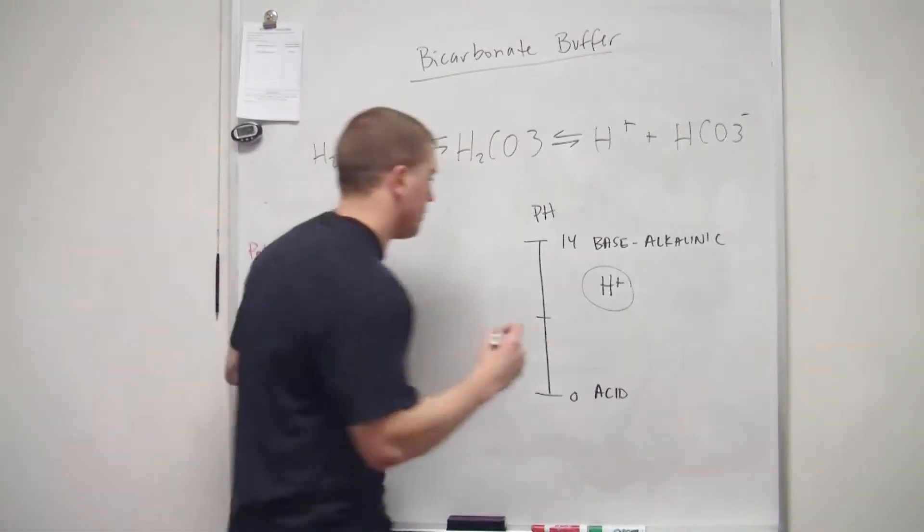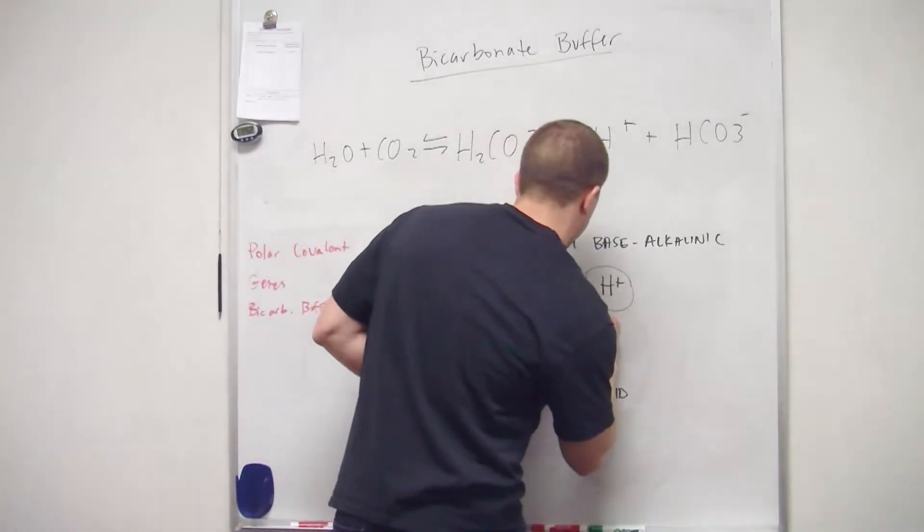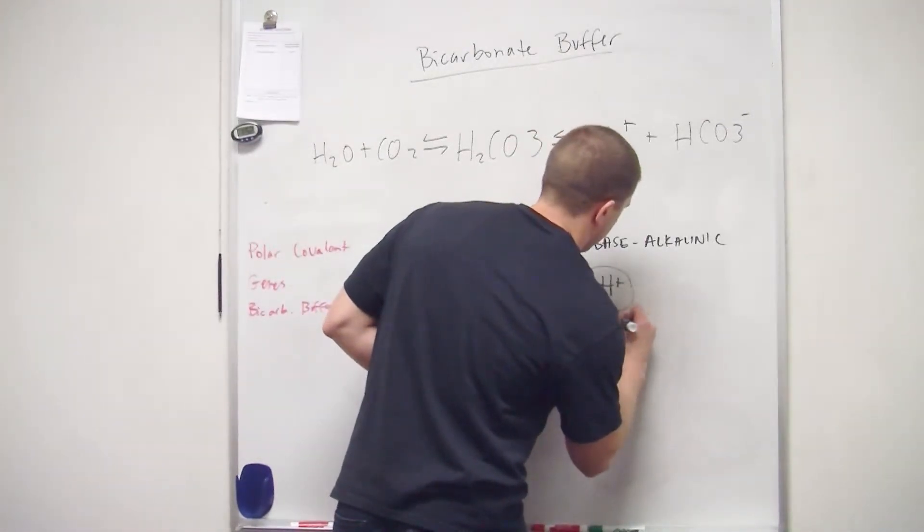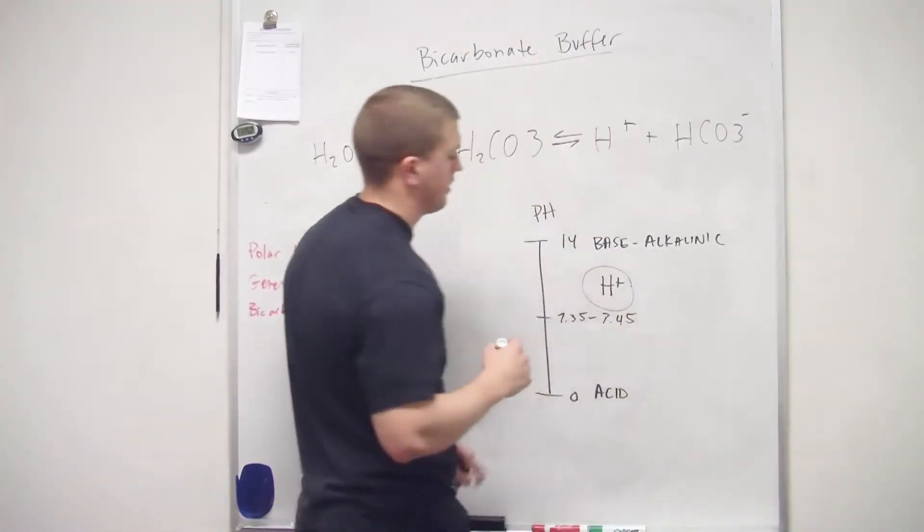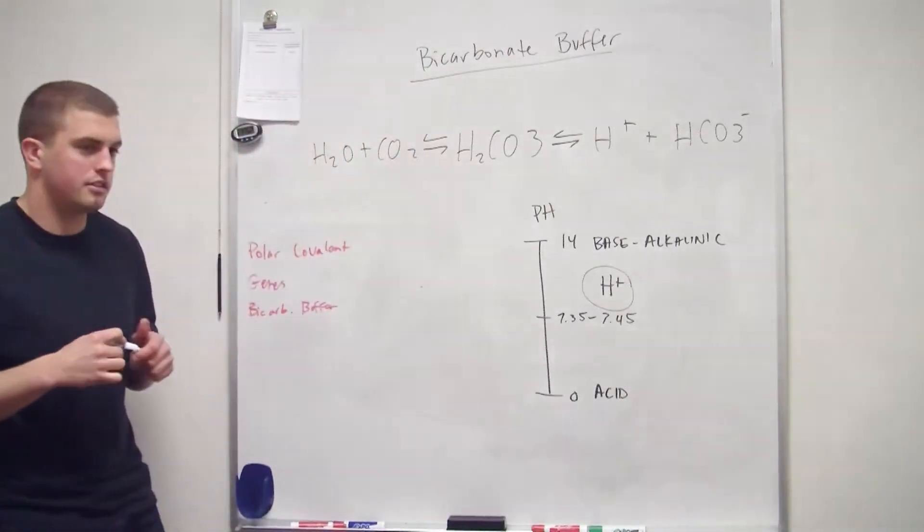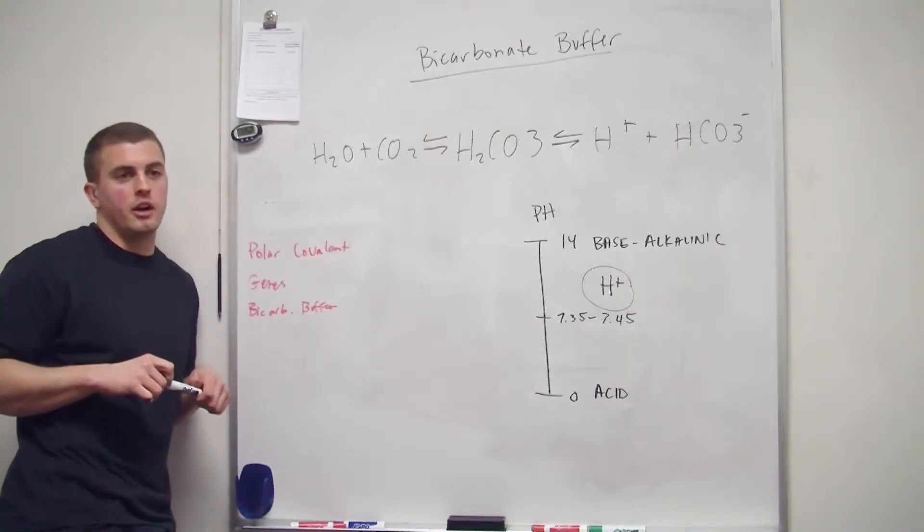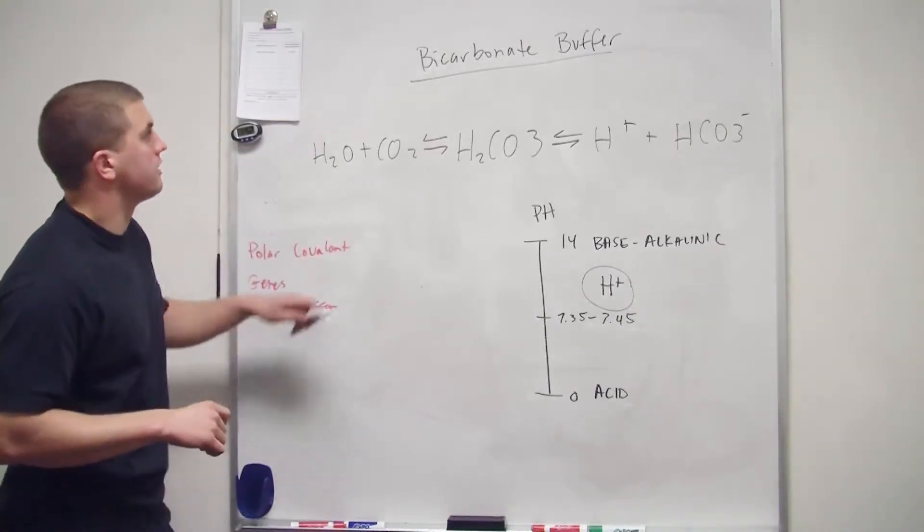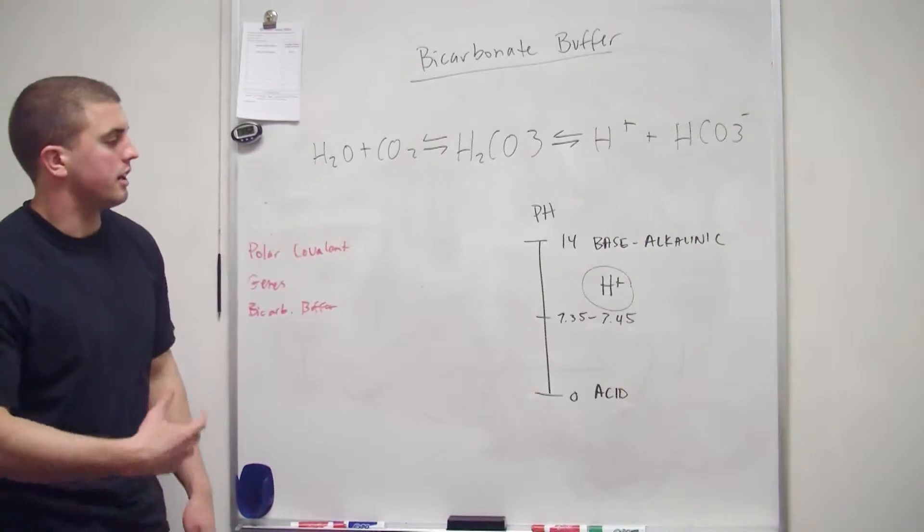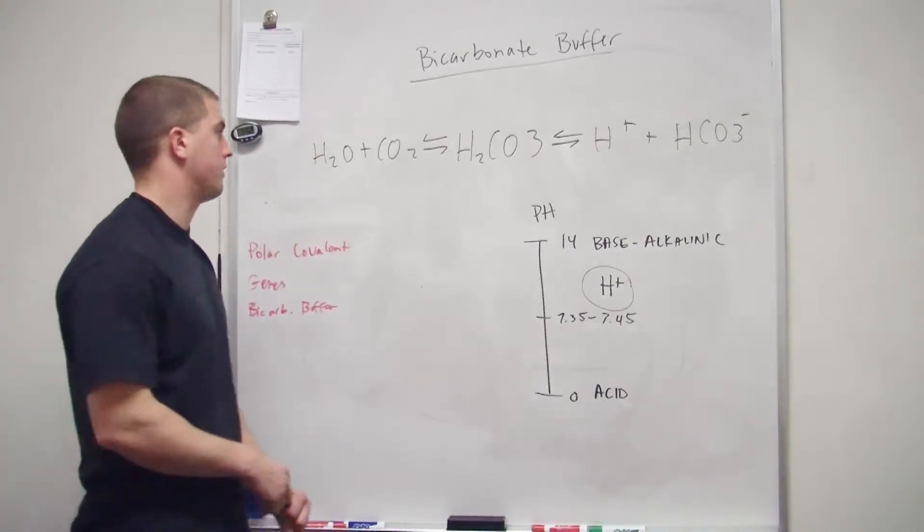And then normal blood is going to be between 7.35 and 7.45. So if it's out of that range, that normal range for us, not at a set point, we've got problems. We're going to try to fix it. And so we use a bicarbonate buffer system to try to fix this problem that we're facing.